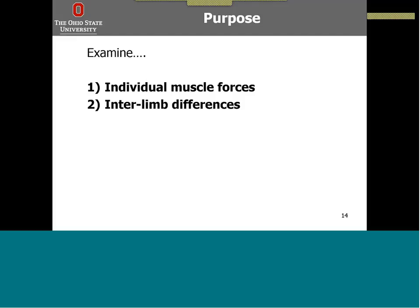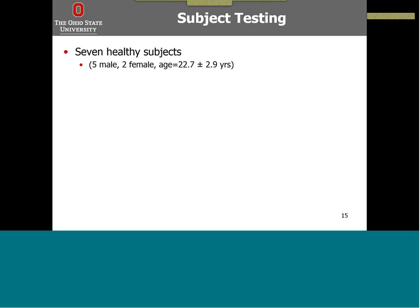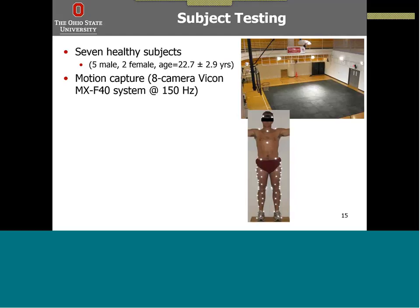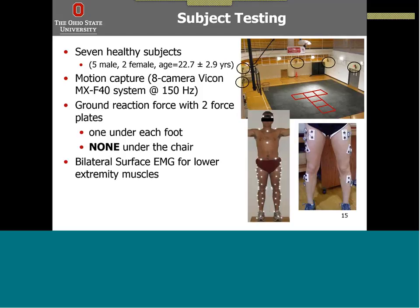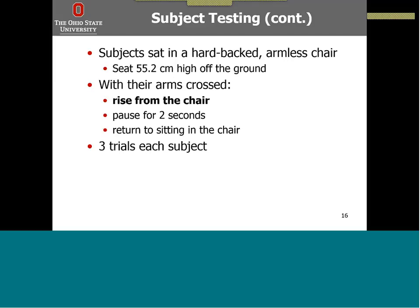For testing, we analyzed seven healthy subjects — five male and two female — with an average age of around 23. We used a motion capture system with reflective markers focused on the lower limb using the point cluster technique and eight Vicon cameras. We also collected ground reaction forces with two force plates, one placed underneath each foot. We used bilateral surface EMG for lower extremity muscles. Subjects sat in a hard-backed armless chair with the seat raised about 55 centimeters off the ground, and with arms crossed, each subject rose from the chair as naturally as possible, paused for two seconds, and returned to sitting. They completed this three times, and we only analyzed the rising portion, using one trial per subject.